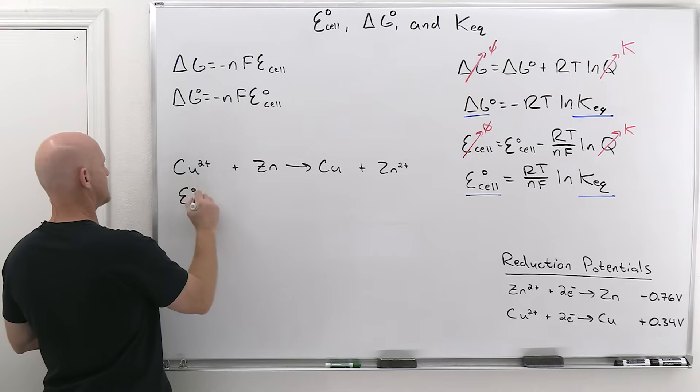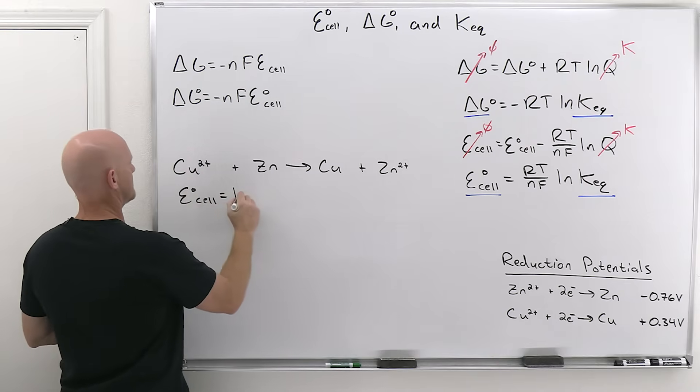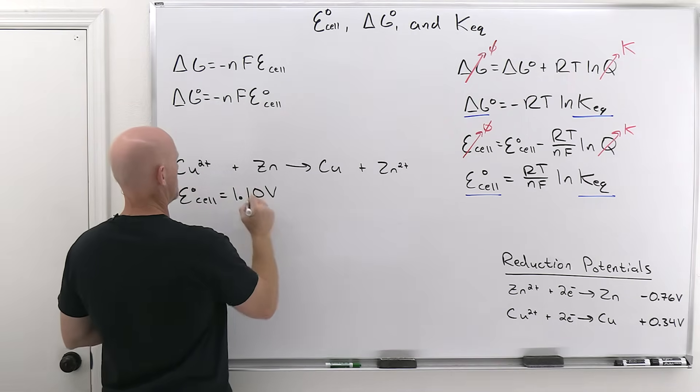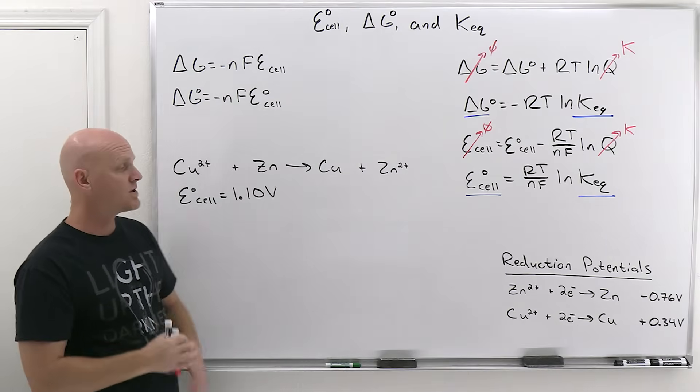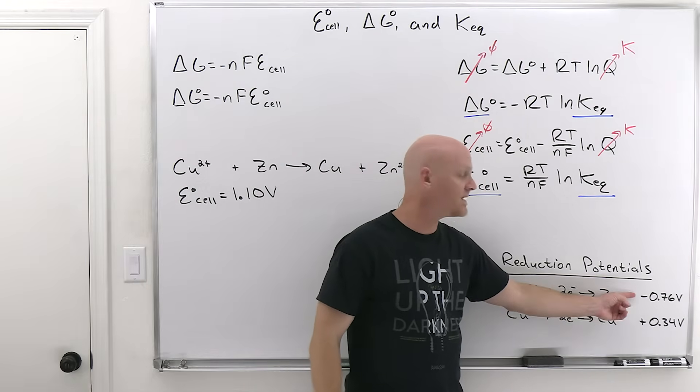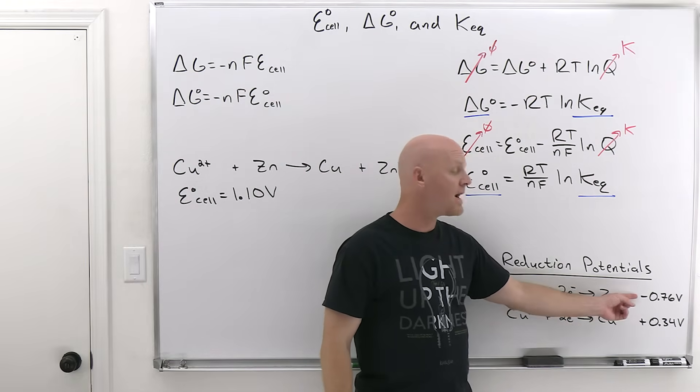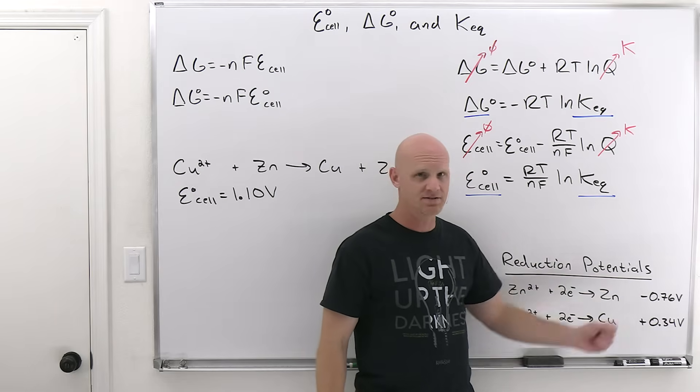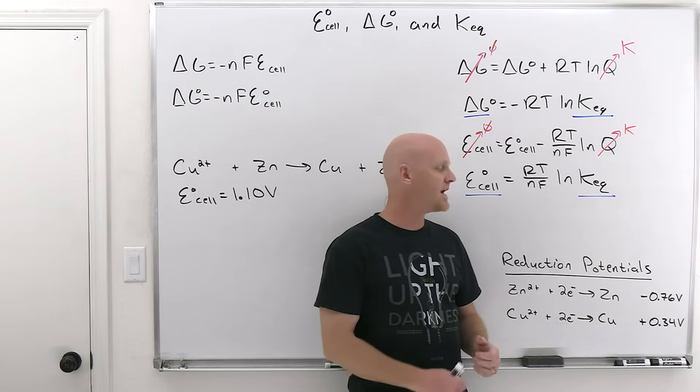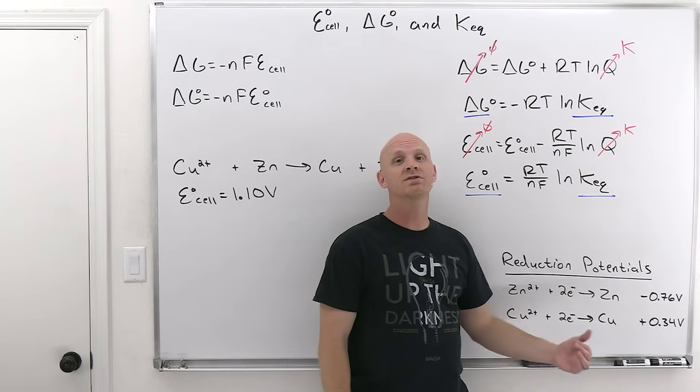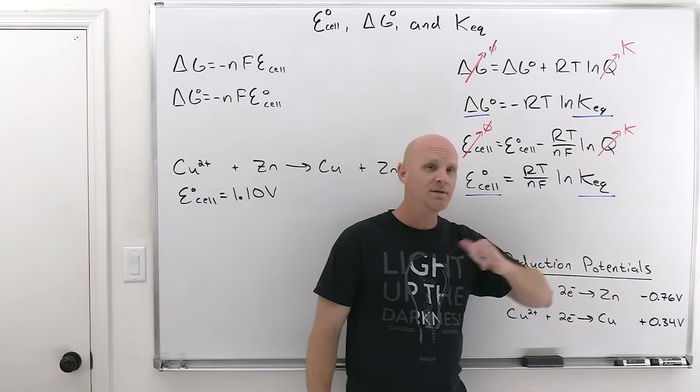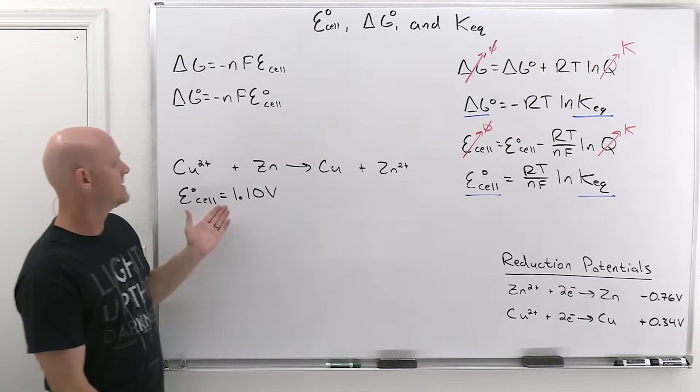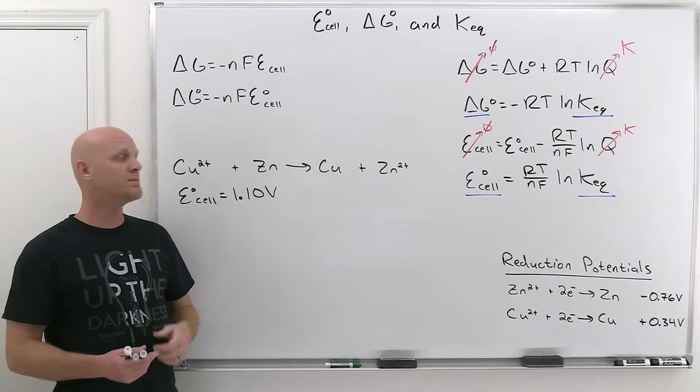And so positive 0.34 and positive 0.76 means that our standard cell potential is going to equal positive 1.10 volts. Notice you could have also done cathode minus anode, 0.34 minus a negative 0.76. So whether you change the sign on the anode to make it an oxidation potential, or whether you subtract to change the sign for you, both lead to the same answer again, that your standard cell potential is 1.10 volts.